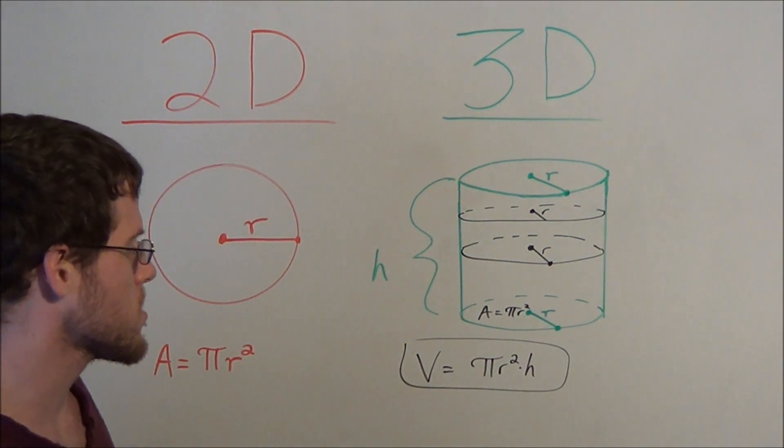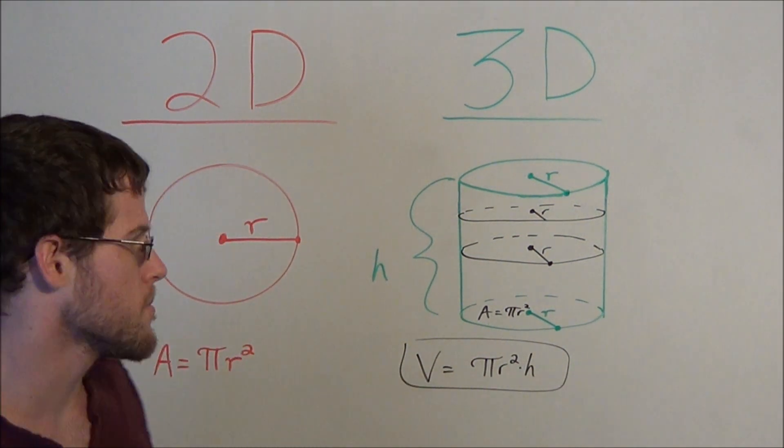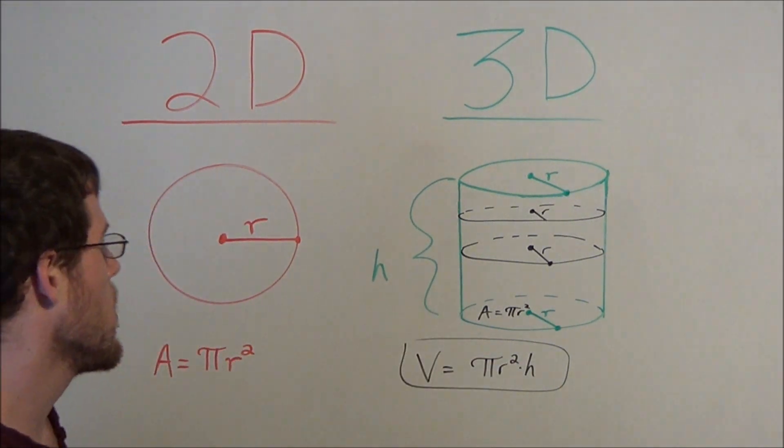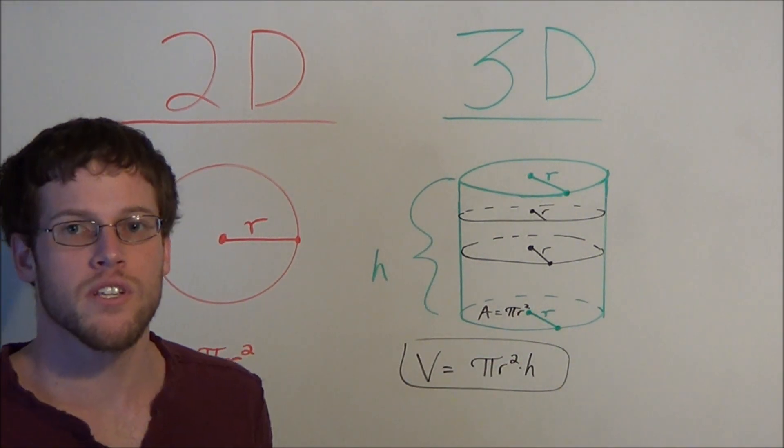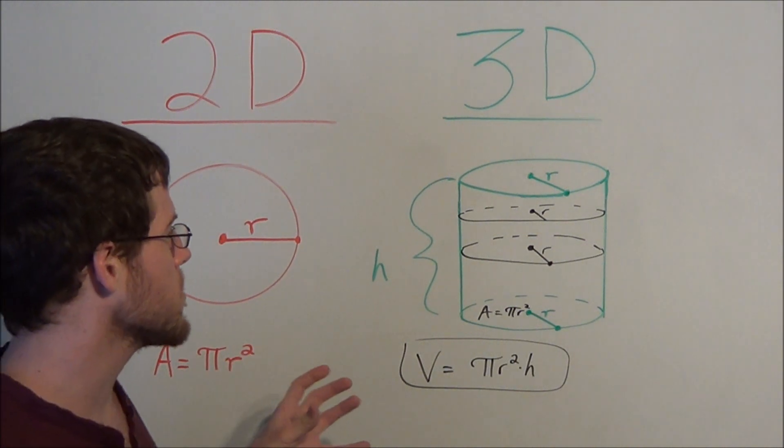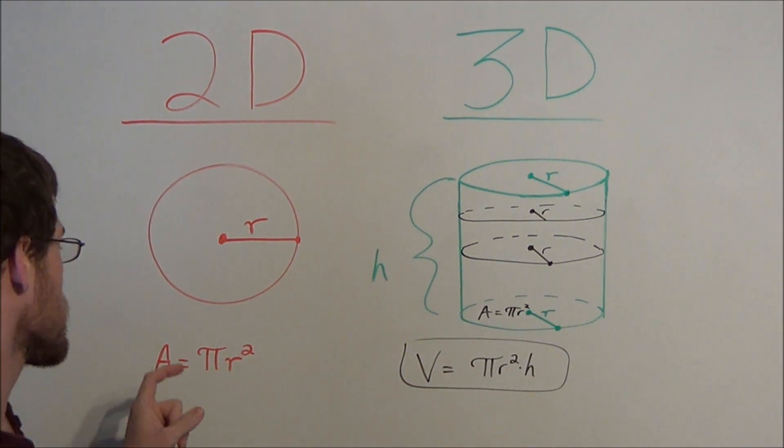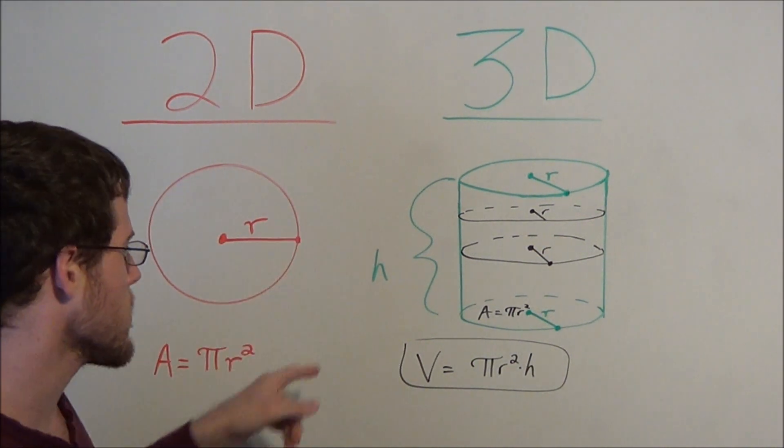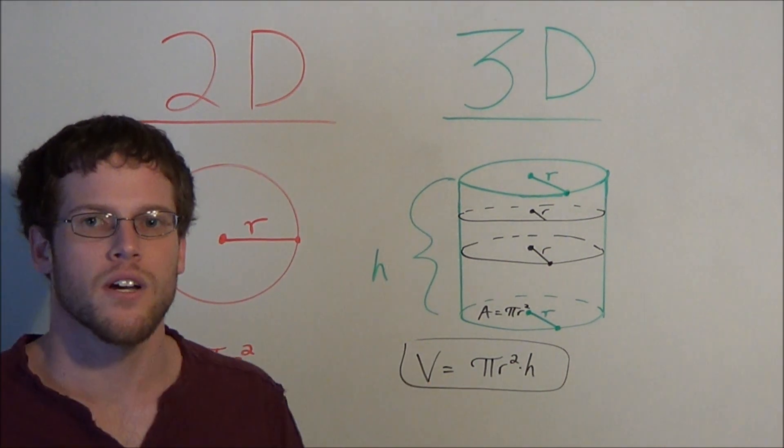This gives us the volume of a cylinder is pi r squared times height. This is an informal proof of the equation for the volume of a cylinder, but it's a convenient way to remember the equation because you just need the area of a circle, and now you're just introducing a new variable of height.